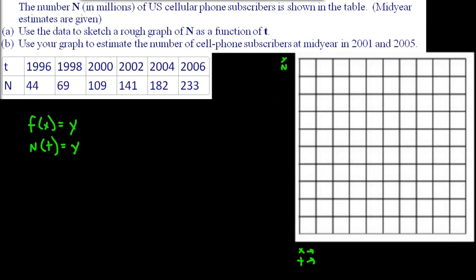So let's just draw our graph here. We'll start off with 1996 right here. So we'll say 96, 97, 98, 2000, 2002, 2004, and 2006. And then we're going to use a different color.